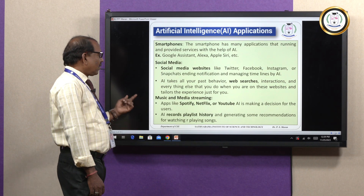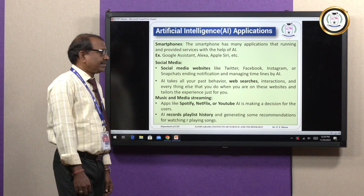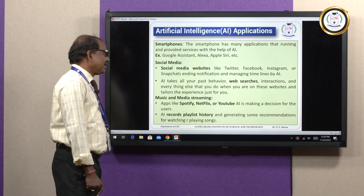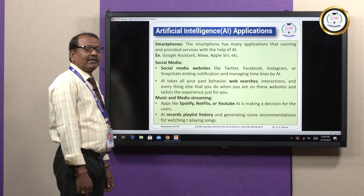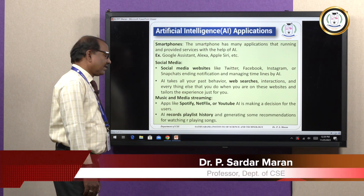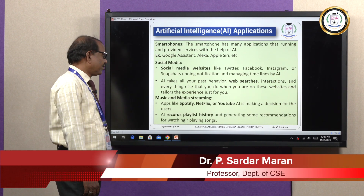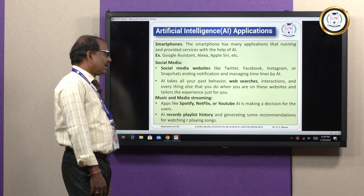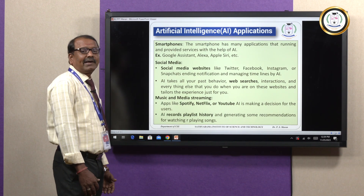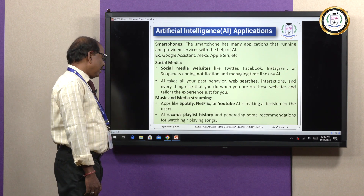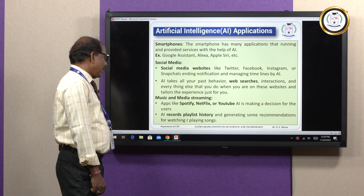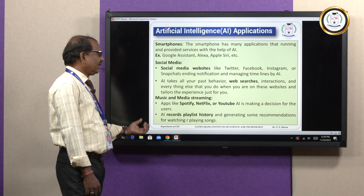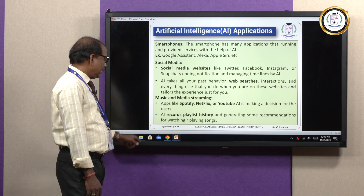AI takes all your past behavior, searching techniques, web searches and interactions with websites — these are all experiences of AI using social media. And for music and media streaming, we have many apps nowadays: Spotify, Netflix, YouTube. These all run with AI and make decisions through AI technology. AI plays an important role in all these technologies, and playlists of songs can be recommended by artificial intelligence.